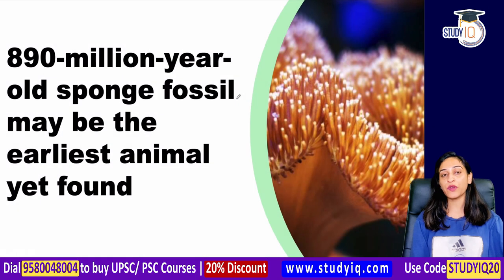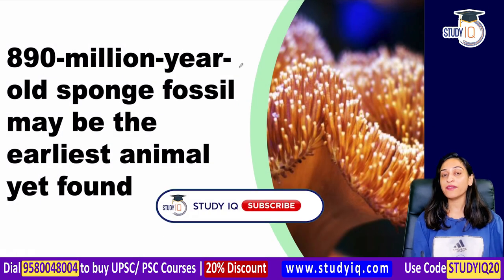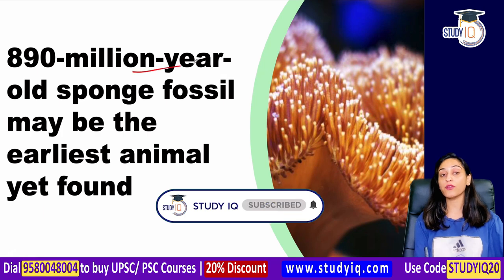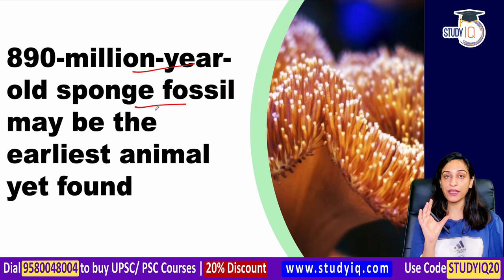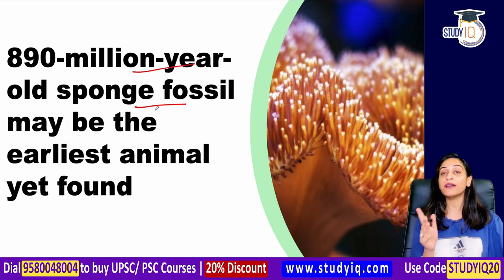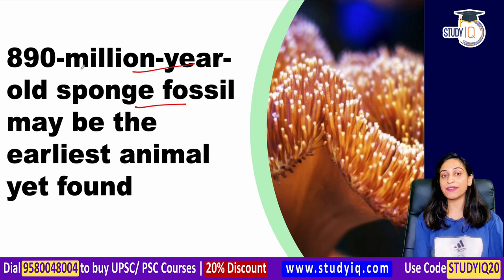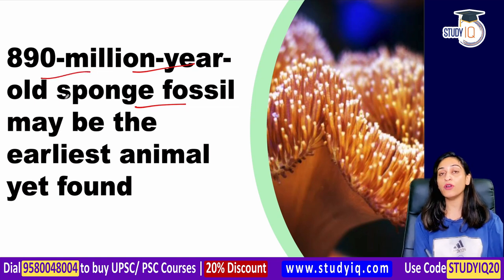Hi everyone, this is Veronica. Today we are going to talk about an 890 million year old sponge fossil, and it may change our knowledge about when the first animal appeared on Earth.